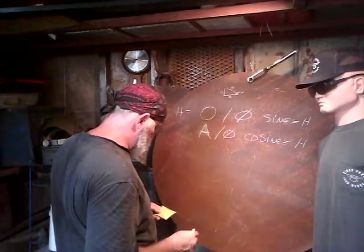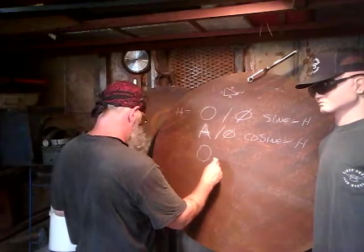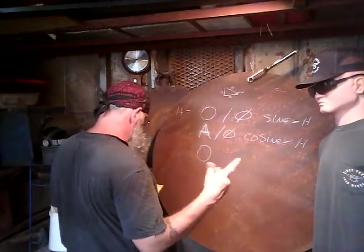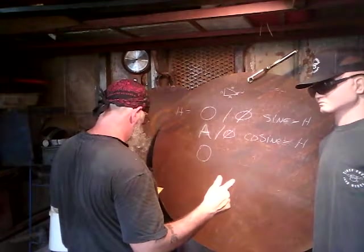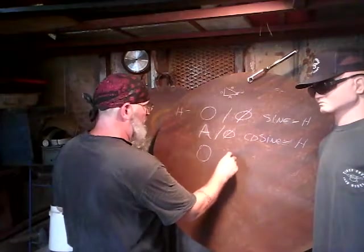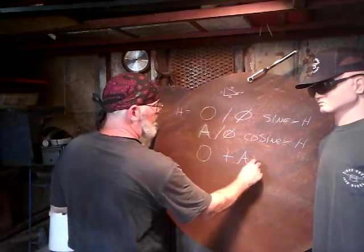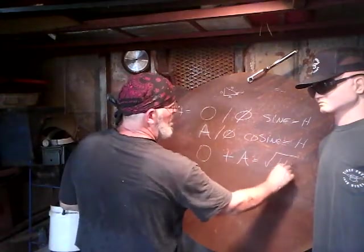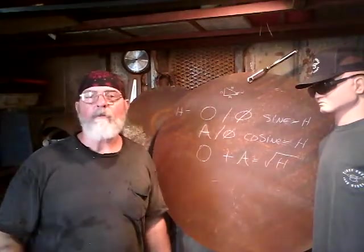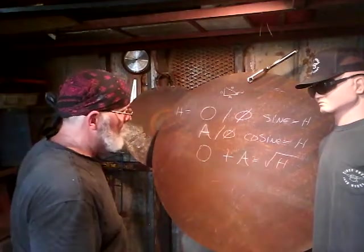Next one: find H when you know O and A. So you know O and you know A, and you need H. O squared plus A squared equals H squared. This is a rare part of this formula — very rare, but needed.